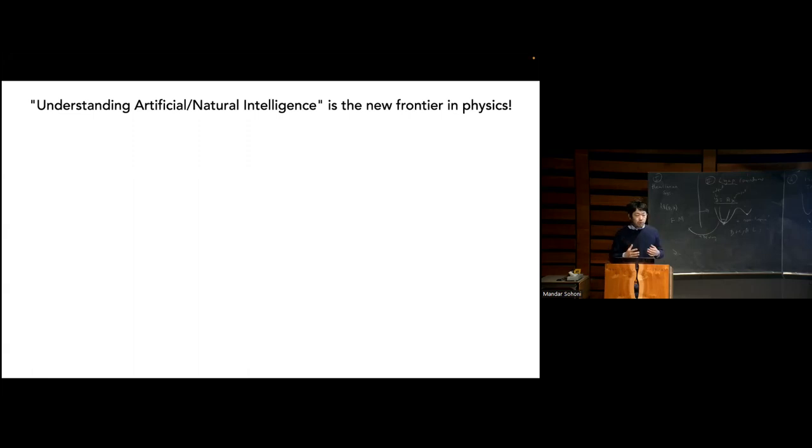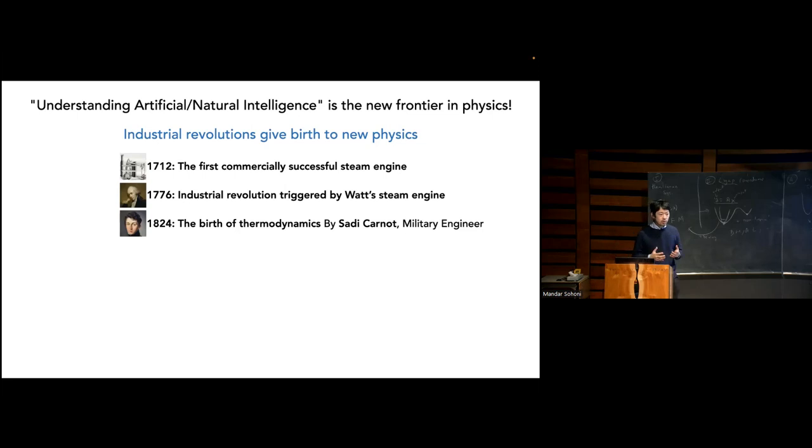The type of research that I do is where I treat AI systems, learning models as a subject of study, and then I take approaches from physics, like how we study natural science systems like biology or soft matter or semiconductors using approaches from physics. And let me first begin by sharing why I think this is a new frontier in physics. If you look back the history of the interaction between technology and science, there is a recurring trend. People often quote how steam engines led to the development of thermodynamics theory. In 1712, the first commercially successful steam engine, and then after a century, the industrial revolution happened, which was like a ChatGPT moment for the world of steam engines. Then it took another half century until Sadi Carnot, who was a military engineer trying to better understand the robot, make it more robust and efficient, which has led to the basic laws of thermodynamics as we know.